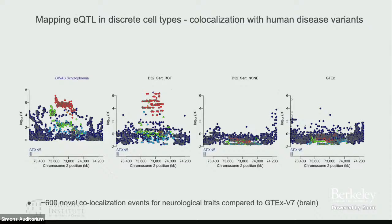To show one example of downstream biological implications: we find interesting co-localization events. Here is one hit for schizophrenia — variants conferring risk for schizophrenic outcomes are also associated with expression changes downstream of the gene SF3X and SF5. These don't show up in GTEx, so you can really drill into very finely defined cells to understand what's going on.